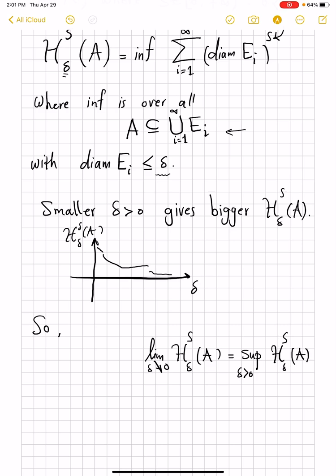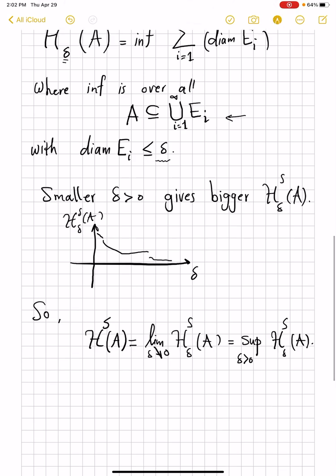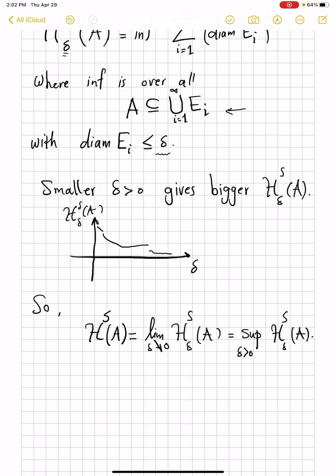And now that this is a well-defined quantity, possibly infinite, but we accept it as the limit, and we call that to be the S-dimensional measure of A. So, finally, we've gotten rid of that delta down there, and this, ladies and gentlemen, is the S-dimensional Hausdorff measure of the set A.